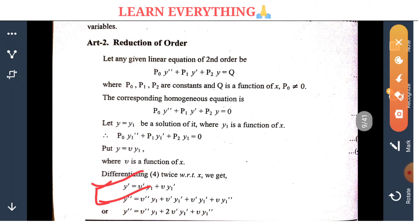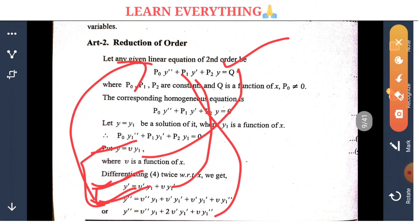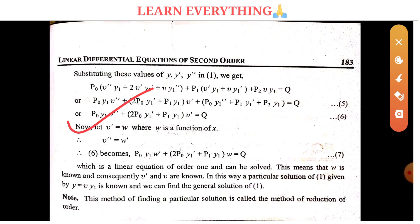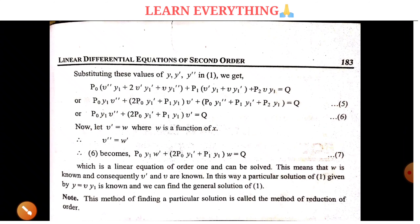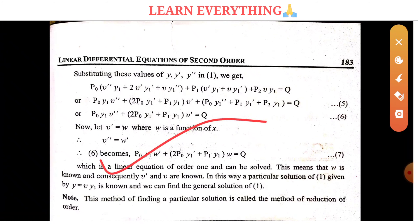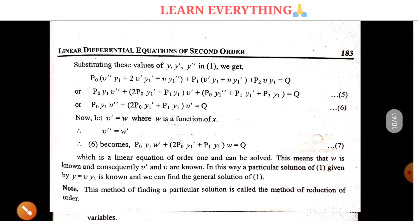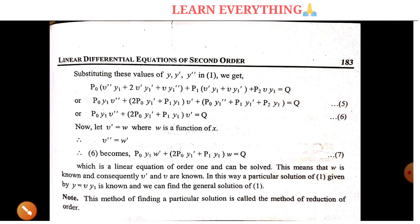We differentiate y. This means that w is known and consequently w prime is known. In this way, a particular solution of equation 1 is given: v equals y, and equation 1 is v·y1. We can find the particular solution using this method.